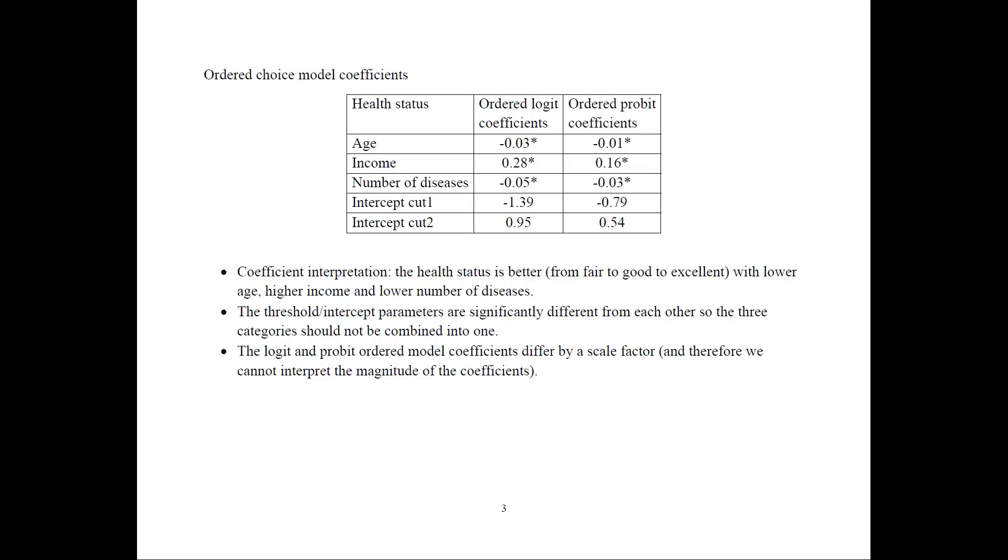Another point to make here is that if you have, for example, some categories with very, very few observations, like less than 3% or something like that, it will be very hard for the model to run and converge or have any meaningful results for this category.